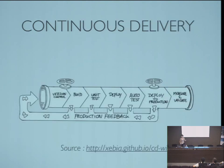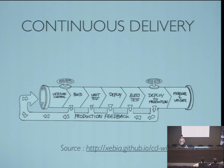This is the typical pipeline of a Continuous Delivery system. In the architecture I'm going to present today, we are going to use Git as version control. The build, unit testing and deployment is going to take place in our Jenkins server, and we are going to deploy to a test server. All these phases will give us feedback to improve this pipeline.